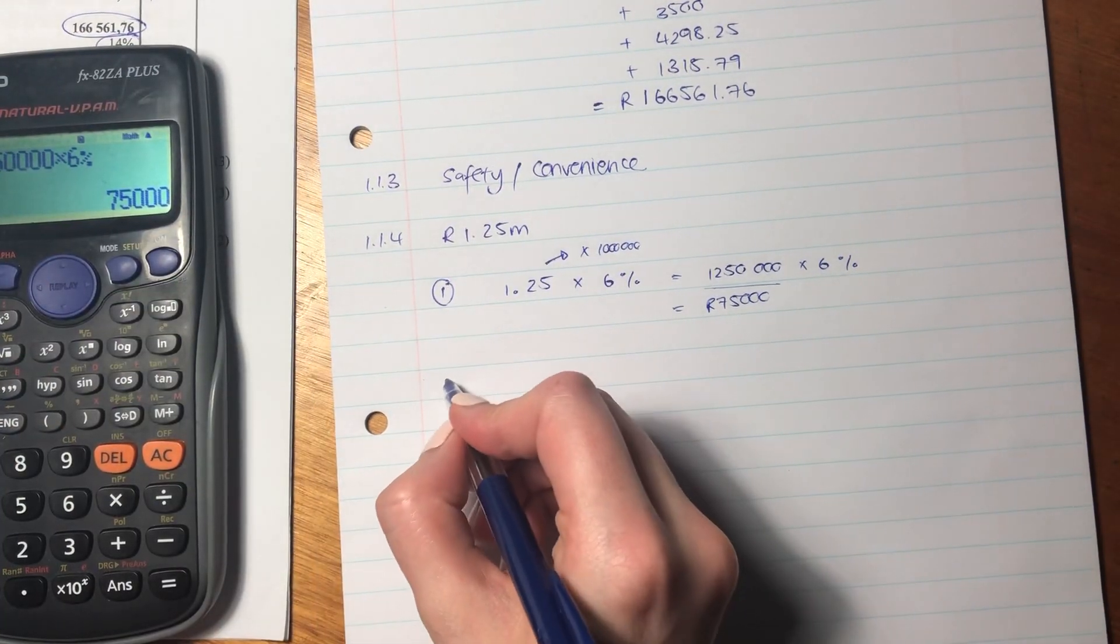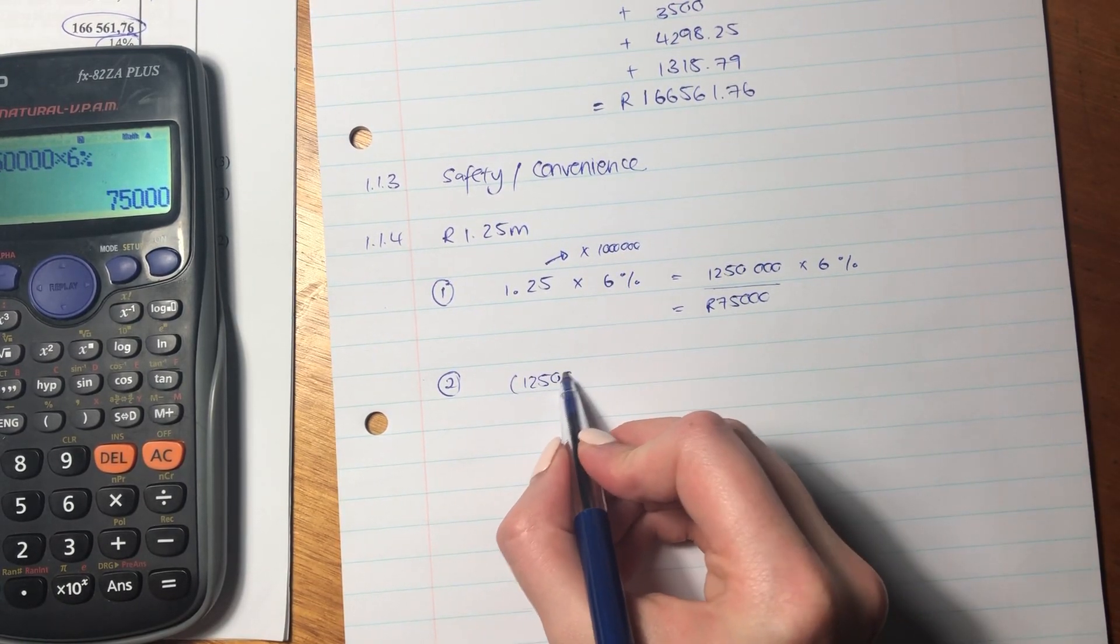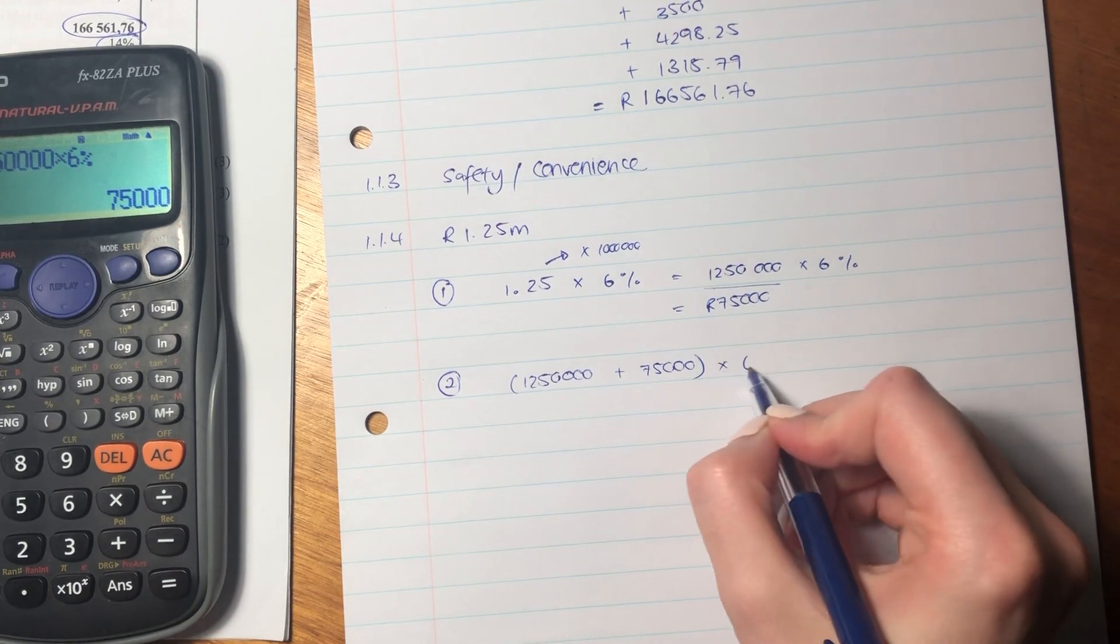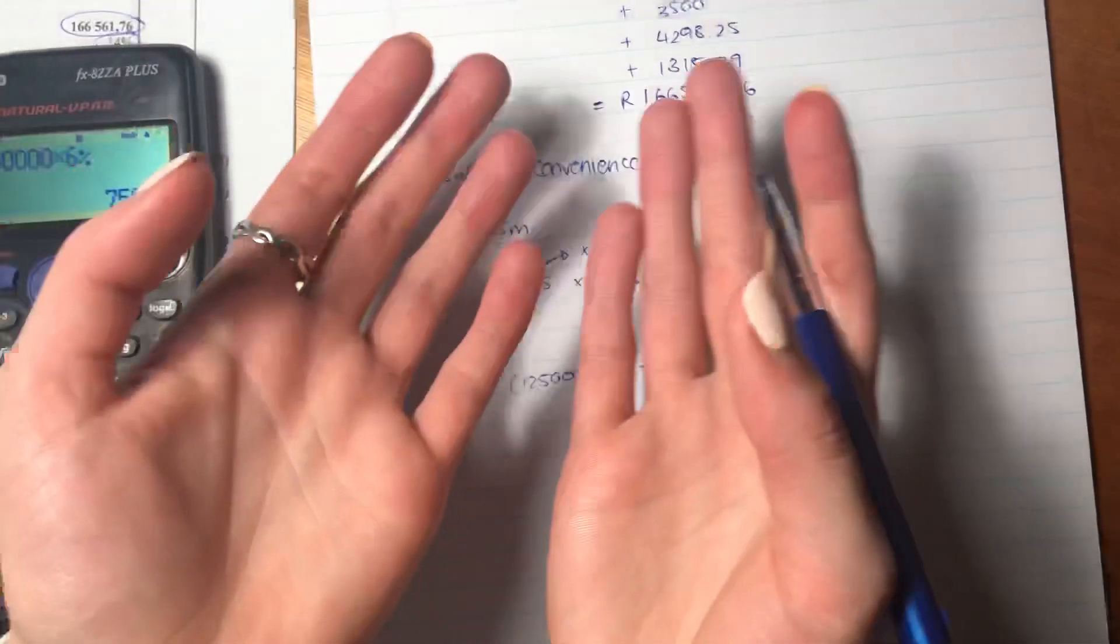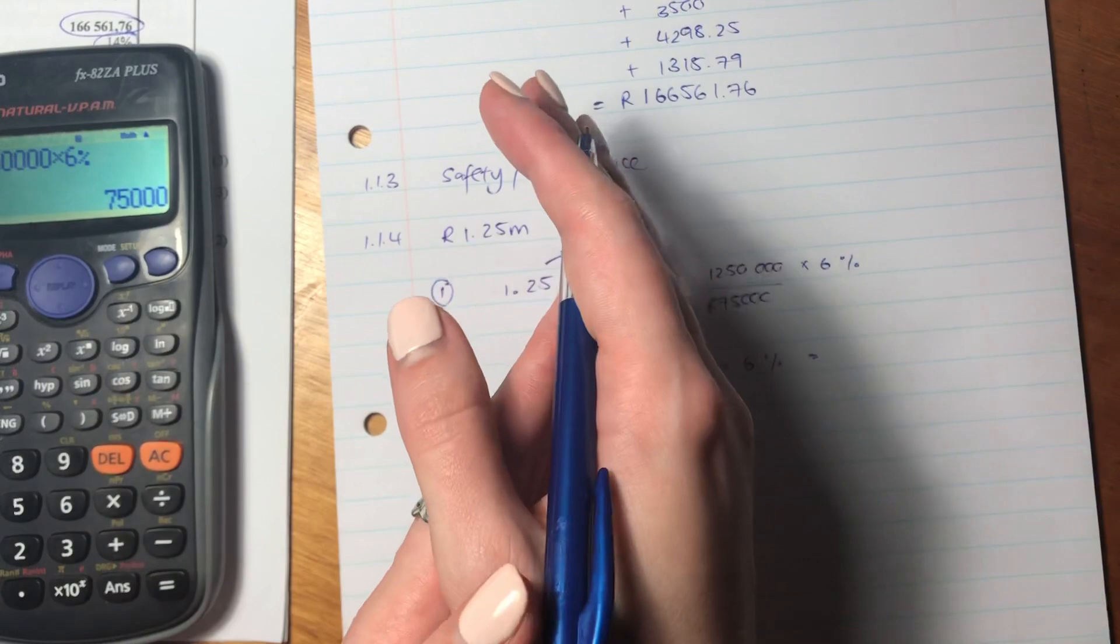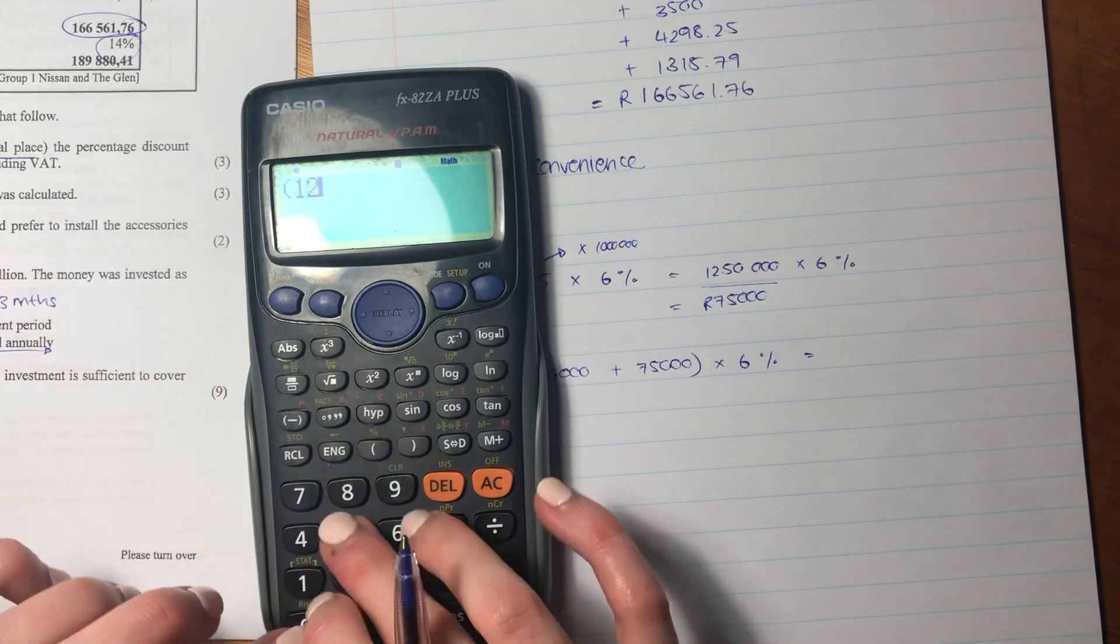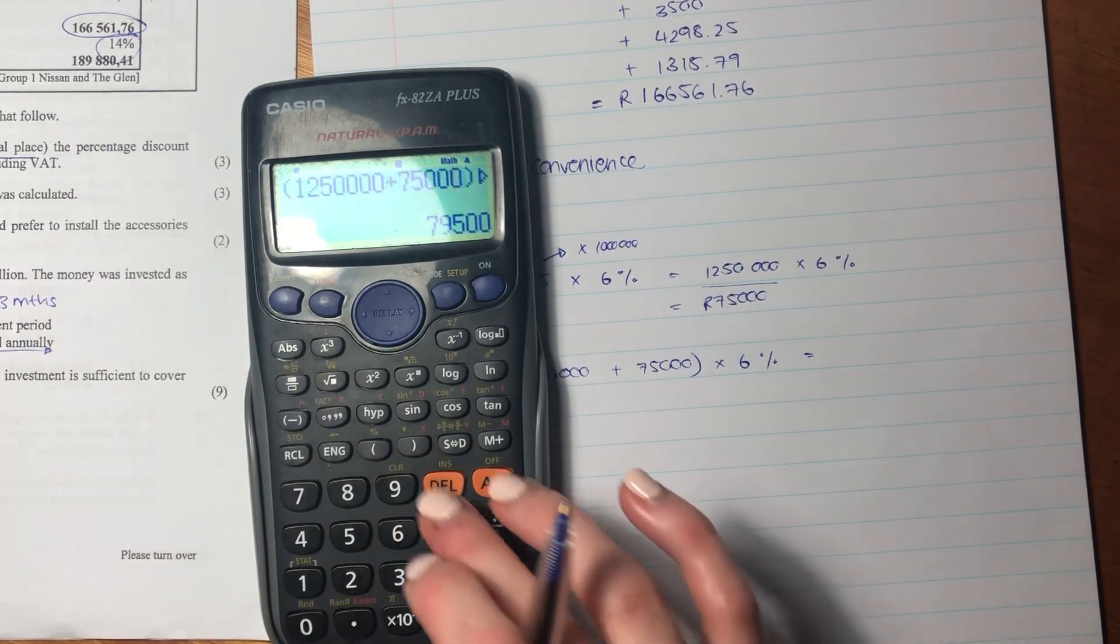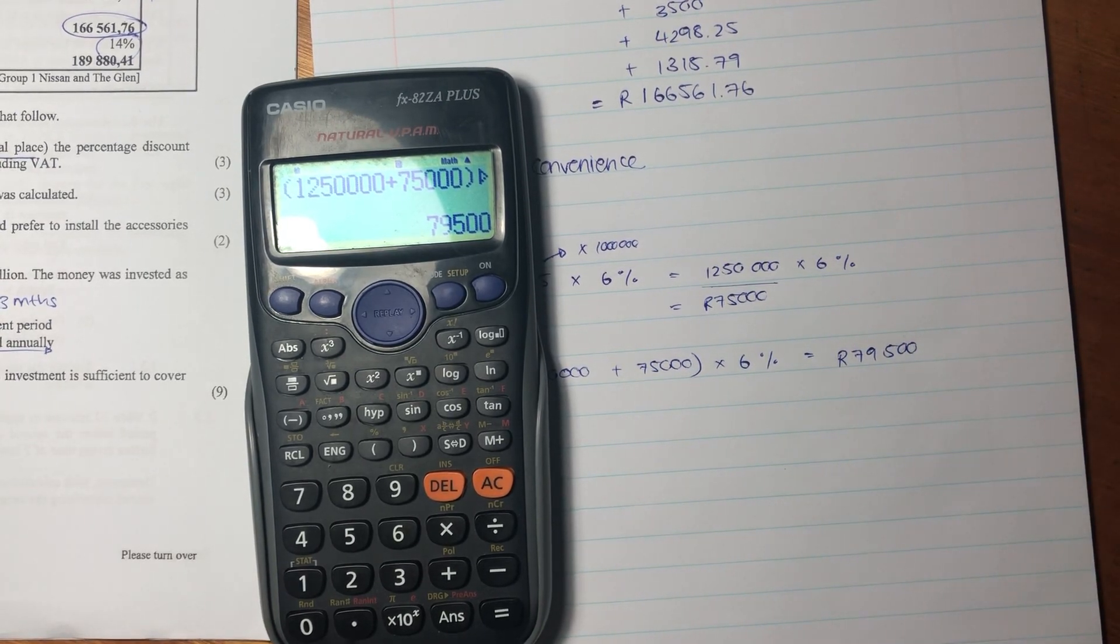So now let's figure out how much she got in the second year. Well, now in the second year, she still has her 1.25 million, she's still got that amount, but she also has the interest that she earns in the previous year. And she earns interest on that amount as well. It's important to remember it's compound interest. She's earning interest on her interest. It's not simple where she's just earning interest on that 1.25 million. She's earning interest on the 1.25 million and the interest that she earns in the first year. So let's now put that into our calculator. Make sure you put it in correctly. And excellent. So she earns in the second year 79,500.